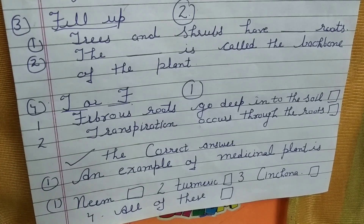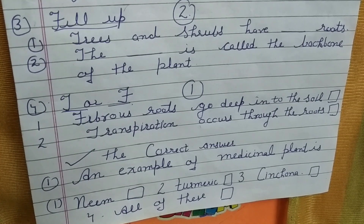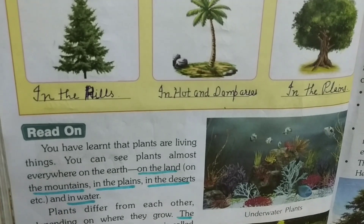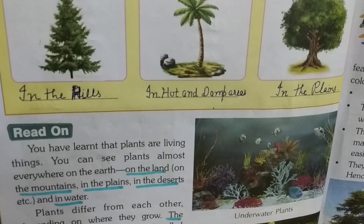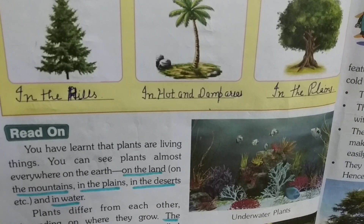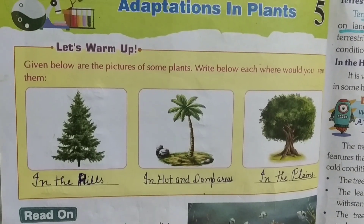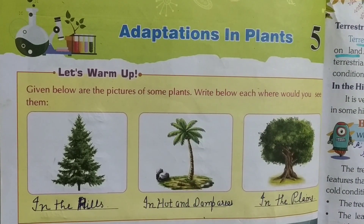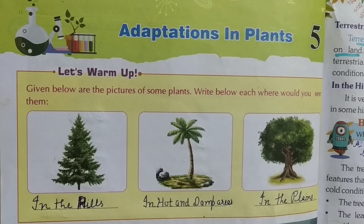Okay students, I think you all have finished your revision test. Take out all your books. Now we will start a new chapter — Lesson 5: Adaptations in Plants. Do reading.